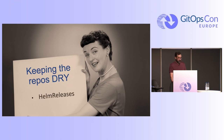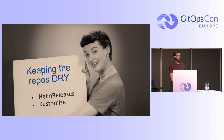For that, we are using Helm releases from Flux — it's a CRD — and Kustomize, which allows us to apply overlays on top of some common base manifests. We can then apply the small differences between environments while keeping the base clean and without duplicated code.